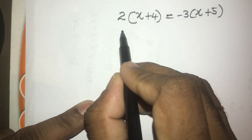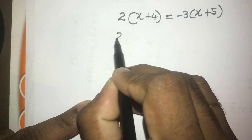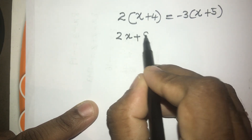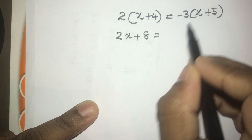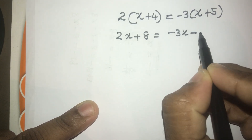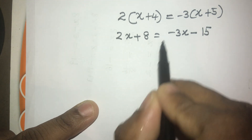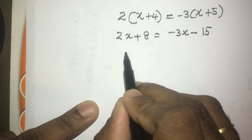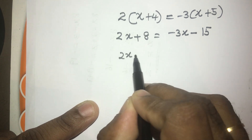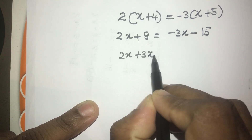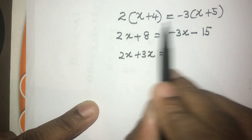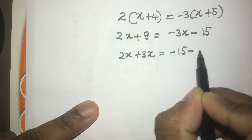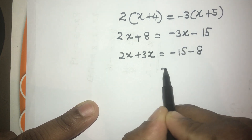Let's solve this equation as well. Here, 2x plus 2 into 4 is 8, minus 3x minus 50. We can bring this minus 3x to the left side — 2x plus 3x — and we can bring this 8 to the right side, so minus 15 minus 8.